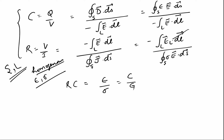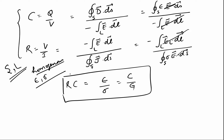Because the integral terms cancel out — either for homogeneous media or when epsilon and sigma have the same spatial dependence — only epsilon/sigma remains. So from our previous lectures, knowing how to calculate capacitance, we can easily find resistance as (epsilon/sigma) × (1/C).